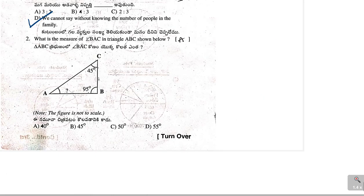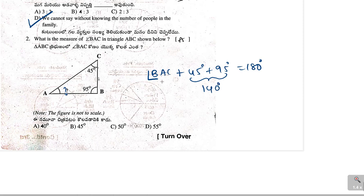Next, second one. What is the measure of angle BAC in the triangle ABC shown below? Here, sum of 3 angles equal to 180 degrees in a triangle. So, angle BAC plus 45 plus 95 which is equal to 180 degrees. So, angle BAC equal to 180 minus 140 which is equal to 40 degrees. So, option A is correct.